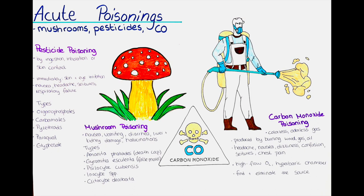Hello and welcome to this channel. In this video we will talk about acute poisonings with pesticides, mushrooms and carbon monoxide. In this video we will focus on three types of acute poisoning: pesticides, mushroom poisoning and carbon monoxide intoxication.